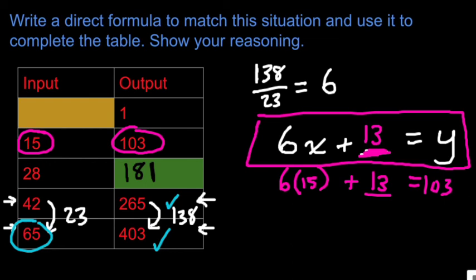And then my last piece, a little bit tougher to do this in the reverse direction. 6 times some number that I don't know, plus 13, needs to equal an output of 1. But that's a two-step equation. You should be able to do. Subtract 13 from both sides, divide by 6 on both sides, and you get your answer. If I input negative 2, I get an output of 1. 6 times negative 2 plus 13 is 1.